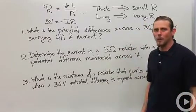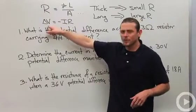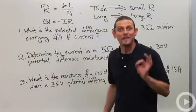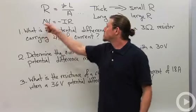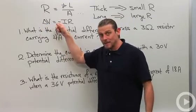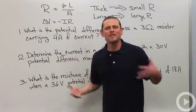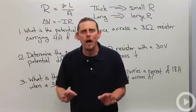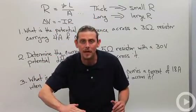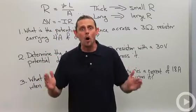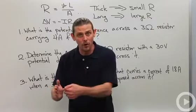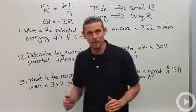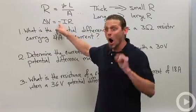So we've got delta V equals minus IR. This is what people usually refer to when they say Ohm's Law — the potential difference equals minus IR. What does this minus sign mean? It means that current flows in the direction of decreasing potential. So if I go across a resistor in the direction of the current, the potential is decreasing, meaning the change of potential will be negative.